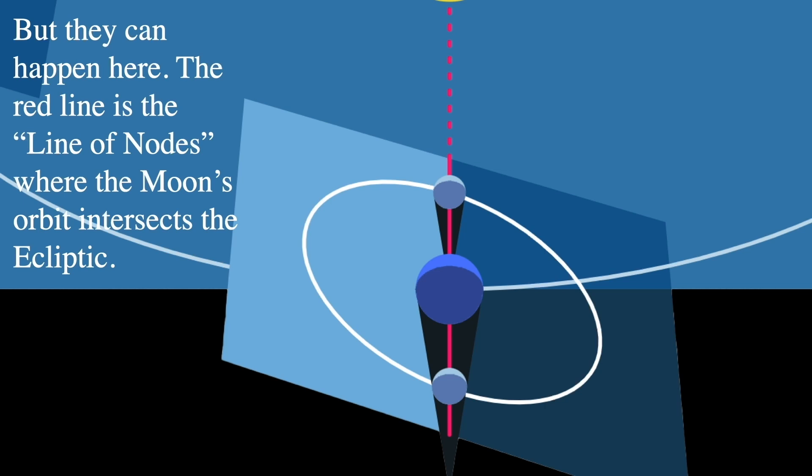The red line is called the line of nodes and this is the intersection where the moon's orbit intersects with the ecliptic. However, it might not happen if the moon is not at the line of nodes for a new moon. So if it's not in new moon phase you won't get a total solar eclipse, and if it's not at full moon, you won't get a total or even partial or even penumbral lunar eclipse. So the moon has to be at the line of nodes on that day.